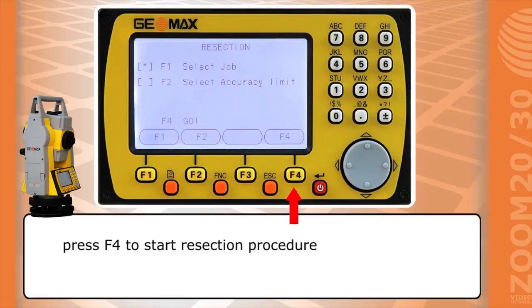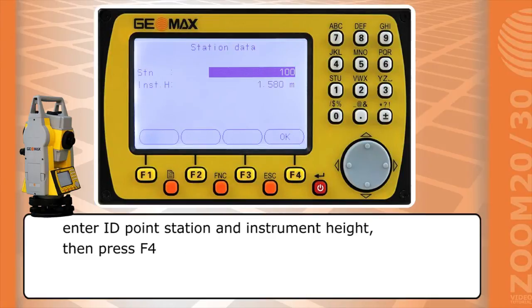Press F4 to start resection procedure. Enter ID point station and instrument height. Then press F4.